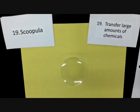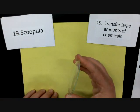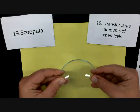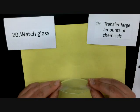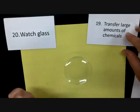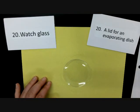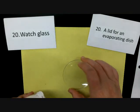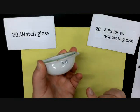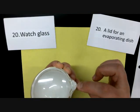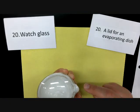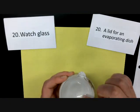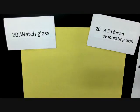The next item looks like a plate made out of glass. Some people say it looks like a contact lens or a monocle. It is called a watch glass. The technical definition of a watch glass is to serve as a lid for an evaporating dish — it fits perfectly onto the evaporating dish. There's still an opening so steam can escape as it's evaporating, and it's nice because you can see inside to check what's happening.